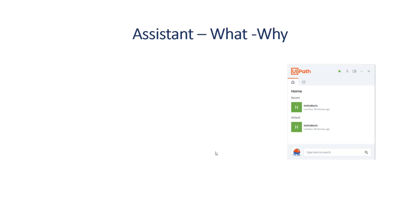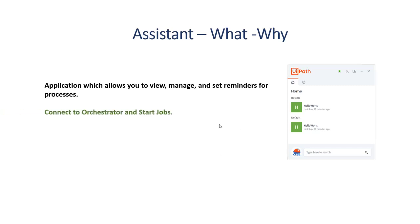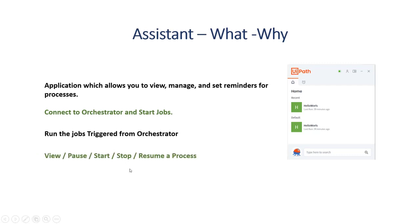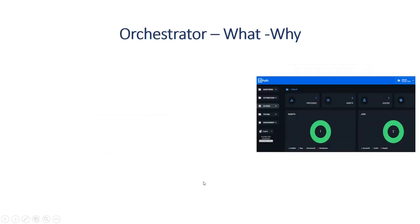The next component is the UiPath Assistant, which is installed along with UiPath Studio. The Assistant is an application that allows you to view, manage, and set reminders for processes. You can treat the Assistant as a mediator between the Orchestrator and UiPath Studio — it's the one responsible for connecting to the Orchestrator and starting jobs. With it, you can view, pause, start, stop, and resume processes, and this applies to attended robots.